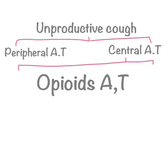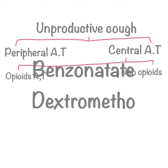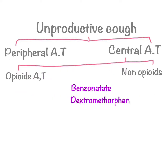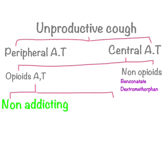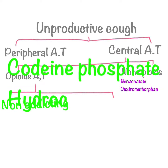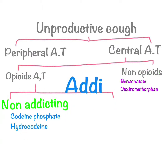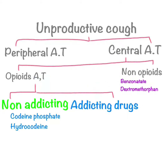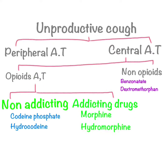Central antitussive drugs are divided into two categories: opioid antitussive and non-opioid antitussive drugs. Non-opioid drugs include benzonatate and dextromethorphan, remembered by the mnemonic BD. Opioid antitussives, which create sedation, are divided into non-addicting drugs and addicting drugs. Non-addicting drugs are remembered by the mnemonic CPH: CP for codeine phosphate and H for hydrocodone. Addicting drugs are remembered by the mnemonic MH: M for morphine and H for hydromorphone.